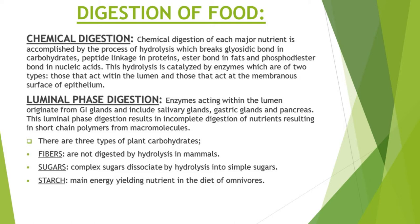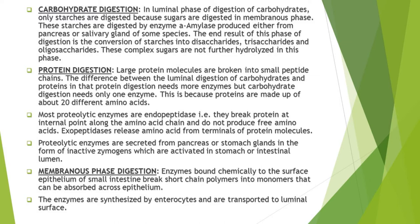There are three types of plant carbohydrates: fibers, sugars and starch. Fibers are not digested by hydrolysis in mammals. Complex sugars dissociate by hydrolysis into simple sugars. Starches are the main energy yielding nutrient in the diet of omnivores. In the luminal phase of carbohydrate digestion, only starches are digested — sugars are digested in the next membranous phase. Starches are digested by an enzyme known as alpha amylase, produced from the pancreas or salivary glands of some species.